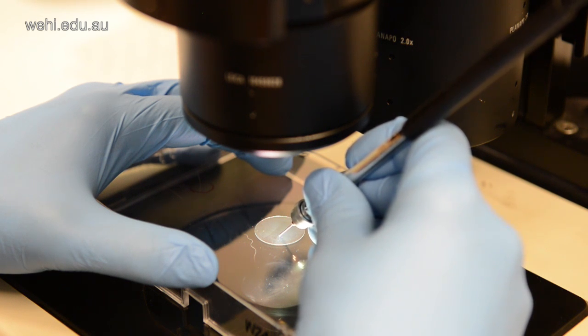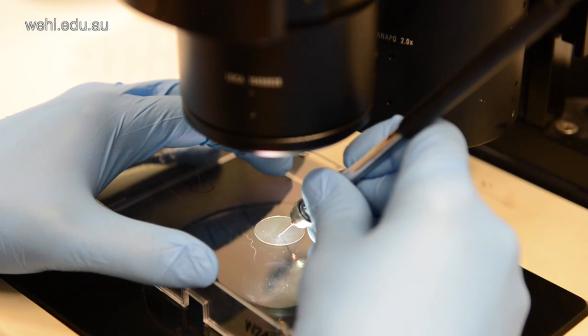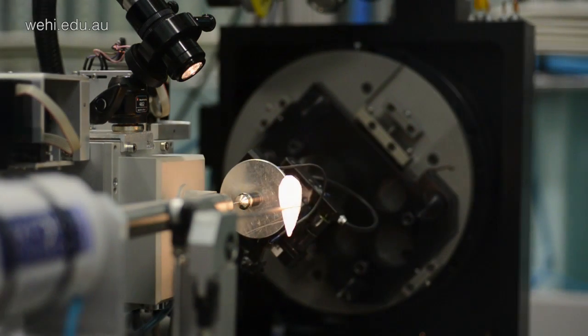To understand the way that these proteins look, we use a process called protein crystallography. This involves taking the protein that we're interested in and growing a crystal of it. Once we have a crystal of it, we can take it to the synchrotron.